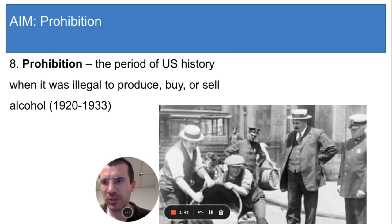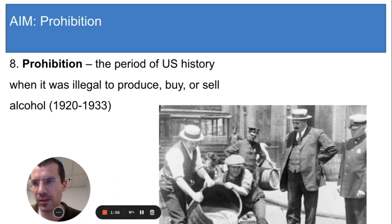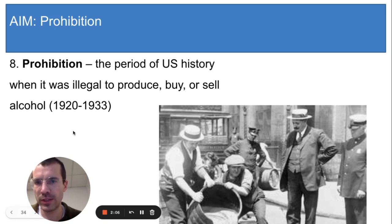The temperance movement gained strength during the Progressive Era and achieved its goal in 1920. That was the year the 18th Amendment was passed, which banned the production and sale of alcohol in every state. And thus began a period of U.S. history called Prohibition — 13 years when alcohol was illegal in the U.S.